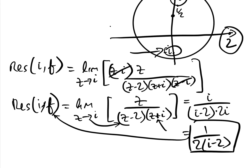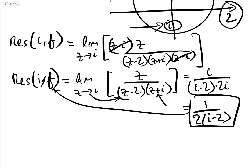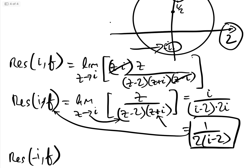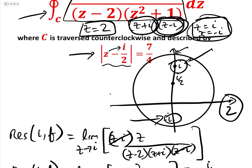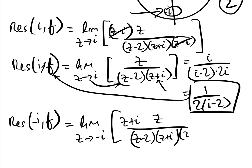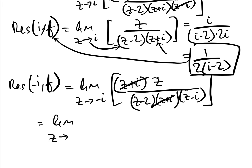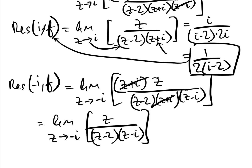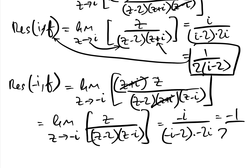The residue at z = −i is also of order 1: Res(−i, f) = limit as z→−i of (z + i) × z / [(z − 2)(z + i)(z − i)]. The (z + i) cancels, leaving the limit as z→−i of z / [(z − 2)(z − i)]. Substituting z = −i gives −i / [(−i − 2)(−2i)] = −1/(2i + 2) = −1/(2(i + 1)).